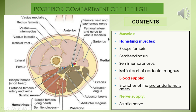The septa separate the anterior compartment of the thigh — where you can see muscles including rectus femoris, vastus medialis, intermedius, and lateralis — and the medial compartment including gracilis, adductor longus, brevis, and magnus. The posterior compartment contains the hamstrings: biceps femoris, semitendinosus, and semimembranosus, with part of adductor magnus also belonging to the hamstrings.